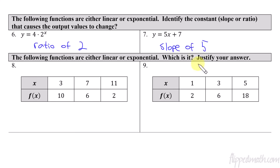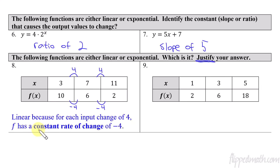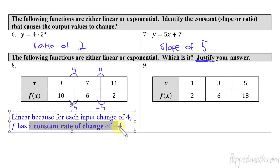The last two are similar to what we've done, but with the extra requirement to justify. First, identify that the x values are changing by the same amount — changing by 4 each time. For the y values: going from 10 to 6 is subtracting 4, or adding negative 4; and then again adding negative 4. So this is linear. The justification: the function is linear because for each input change of 4, f has a constant rate of change of negative 4.